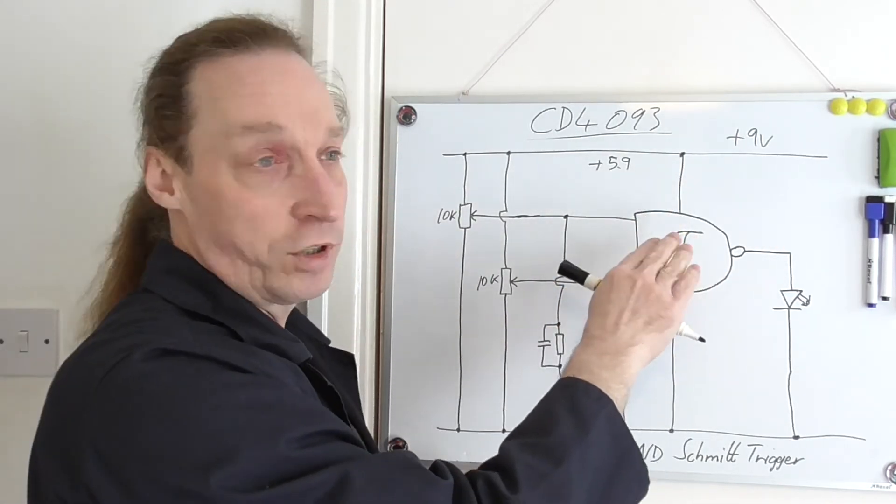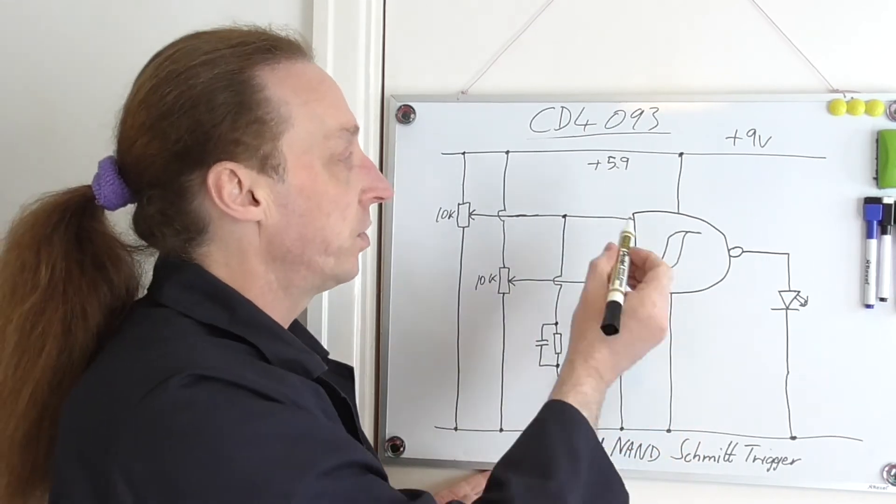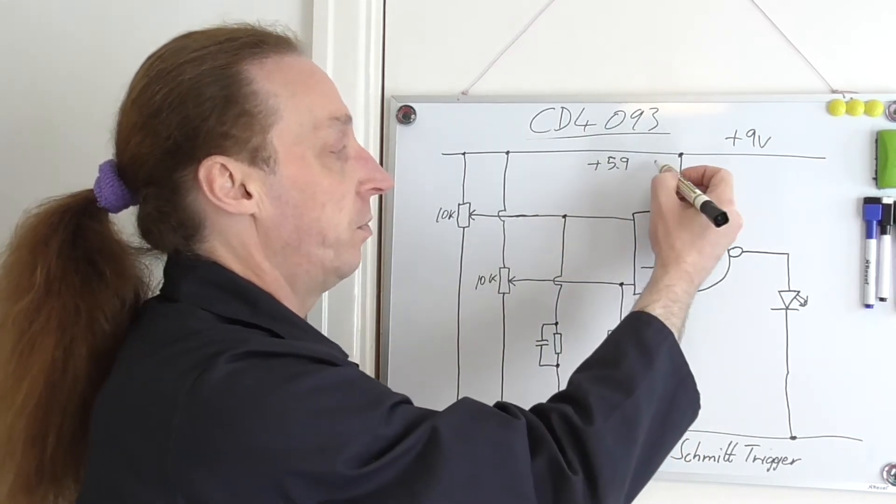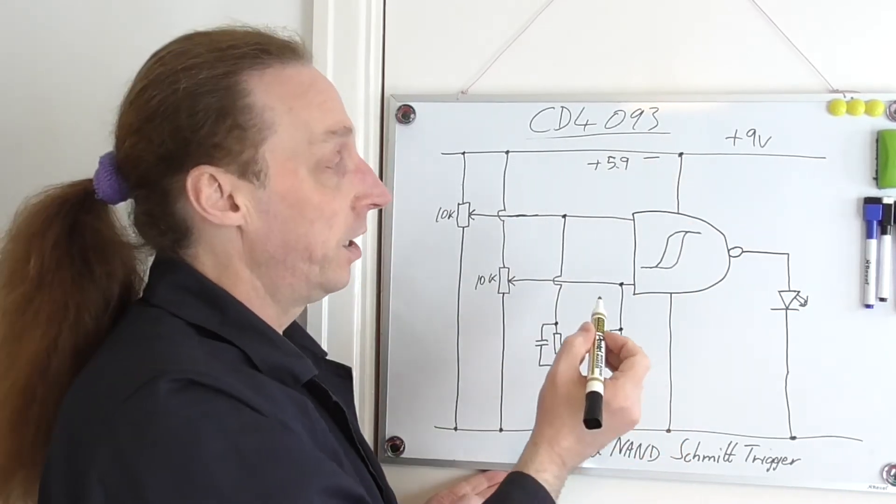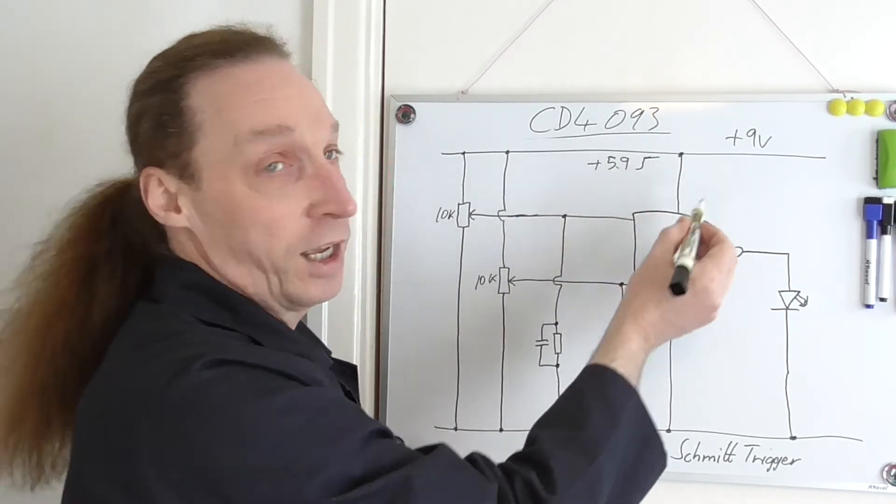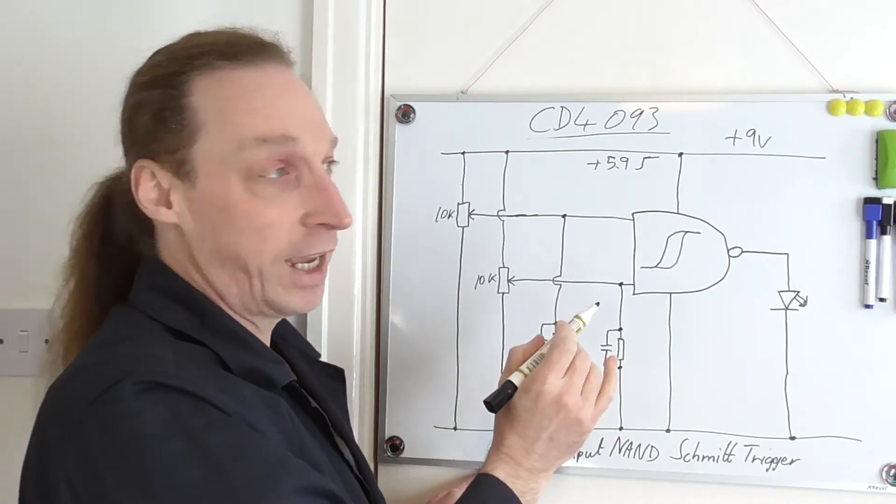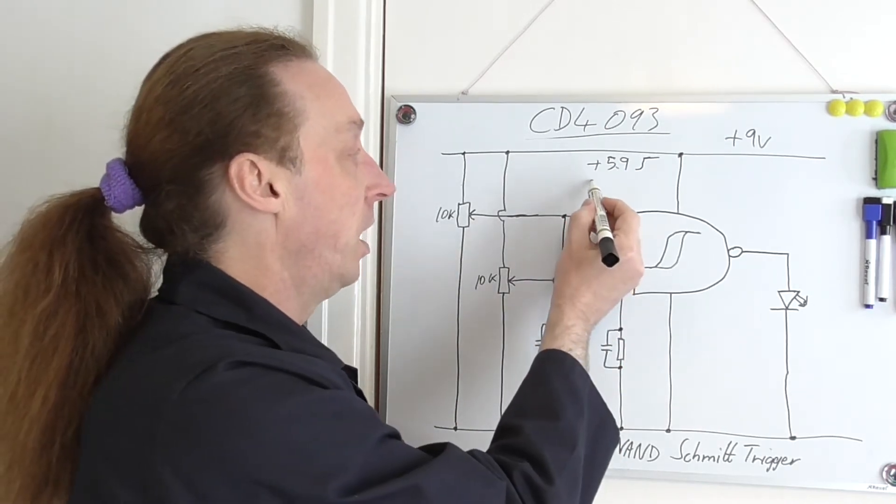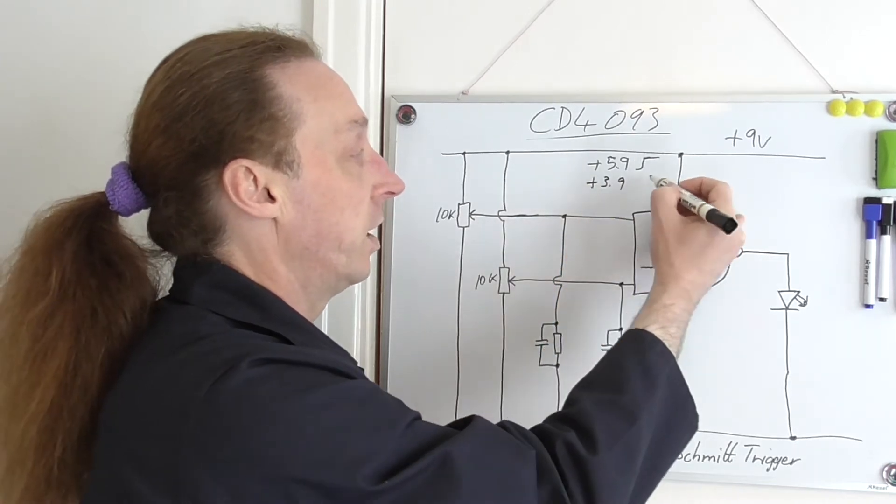So it has to be plus 5.9 for it to be counted as a high, and let's draw it like this. So it's counted as a high when it's at 5.9 and it's counted as a low at about 3.9.